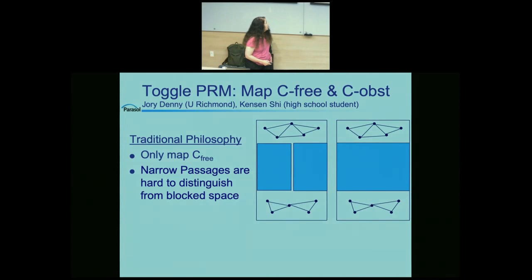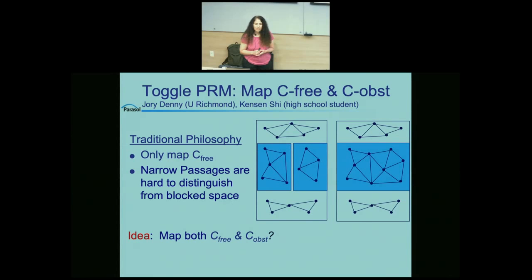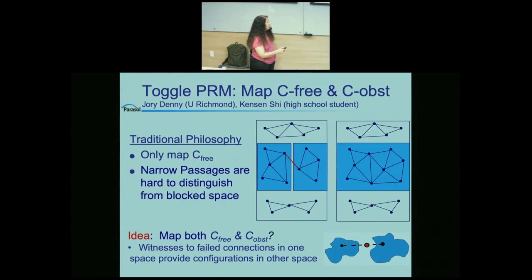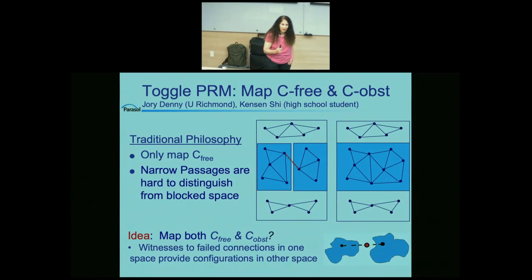When we map both free and blocked space, they look different in the two scenarios. In the case with no passage, the blocked space has a left and right component; in the case with a narrow passage, the blocked space has just one component. When we try to connect the two components in the blocked space and fail — because the connection crosses the free space — we've actually found a point in the narrow passage. By mapping both free and blocked space simultaneously, which we can do using all the same operations, we naturally find these important, hard-to-find points.